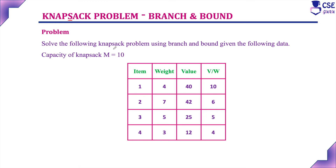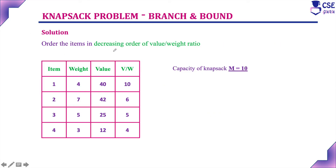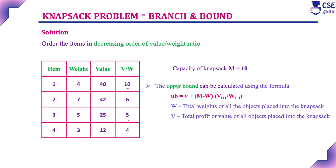This is the given problem: solve the following knapsack problem using branch and bound technique. The capacity of the knapsack m is equal to 10, and there are 4 items with corresponding weight, value, and value-by-weight ratio. The first step is to arrange the items in decreasing order of value-by-weight ratio. The given items are already in decreasing order, so no reordering is needed. In this problem, we are going to find the upper bound value at each step.